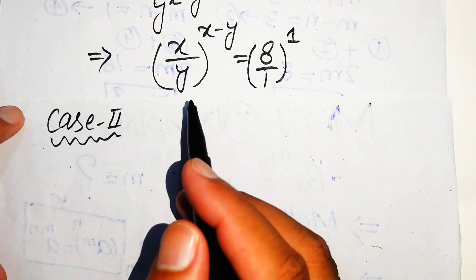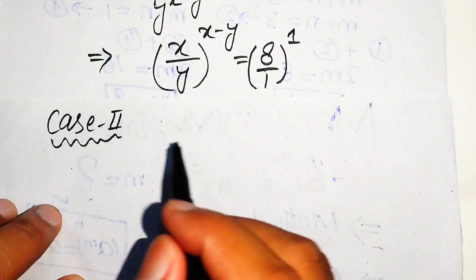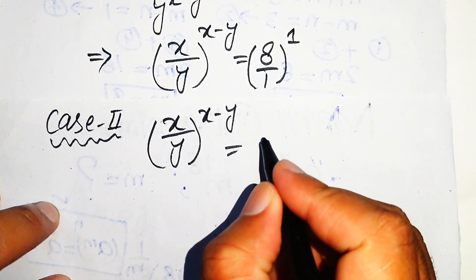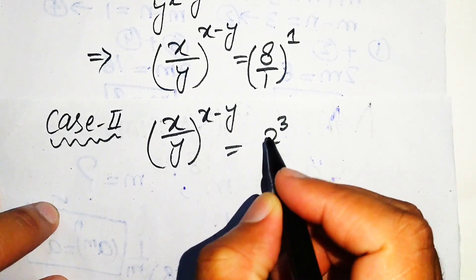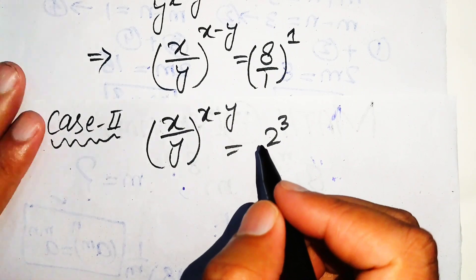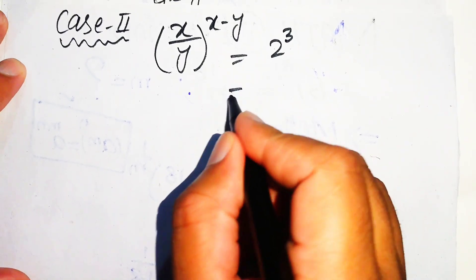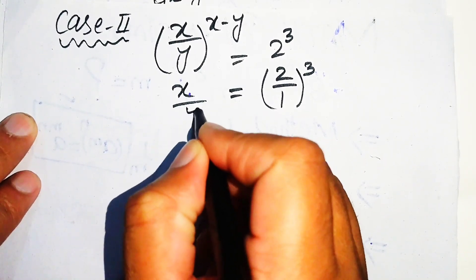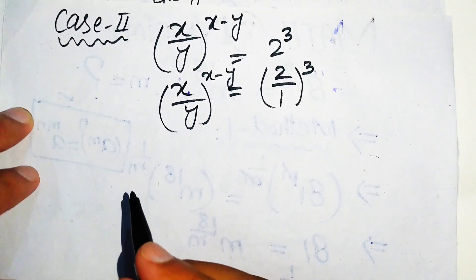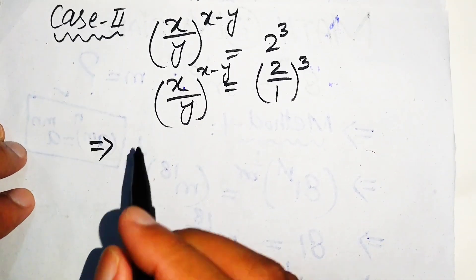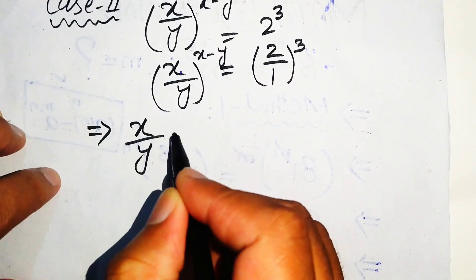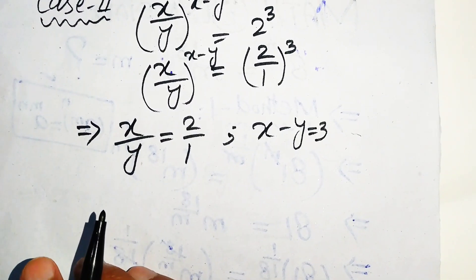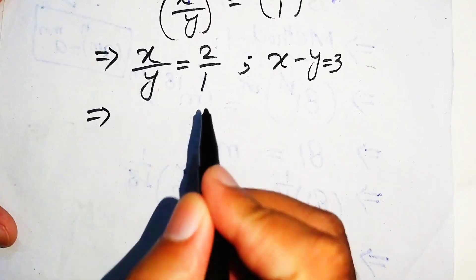For Case 2, we rewrite the equation as (x over y) to the power of x minus y equals 8. We write 8 as 2 cubed, and express this as (2 over 1) to the power of 3. Comparing both sides, we get x over y equals 2 over 1, and x minus y equals 3.